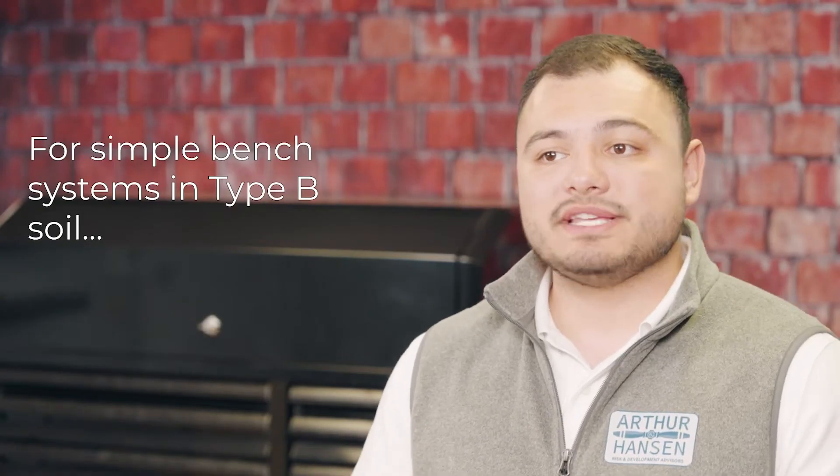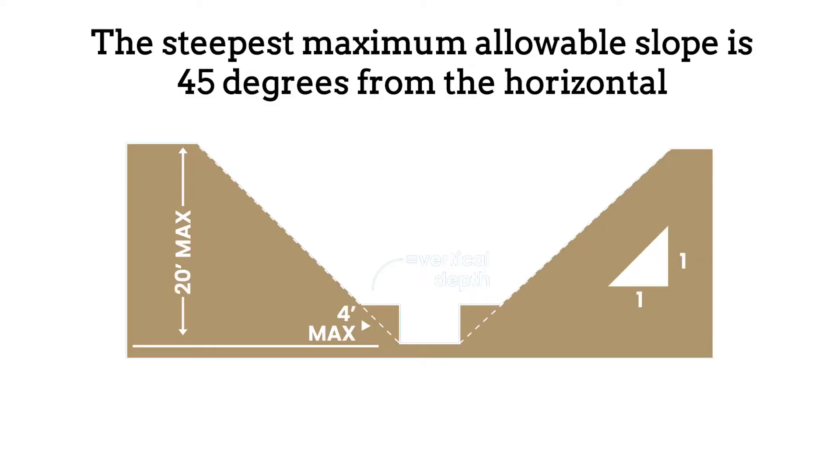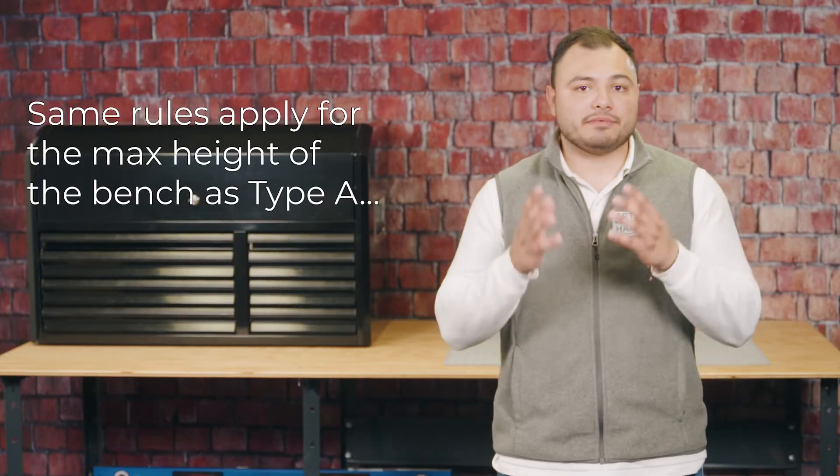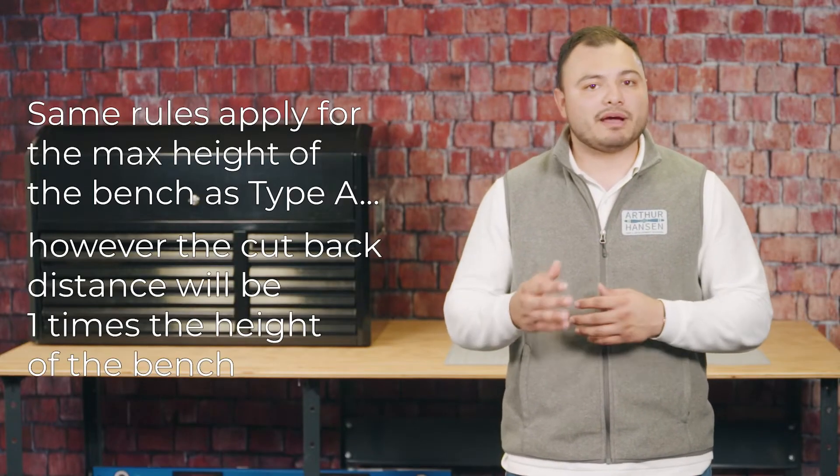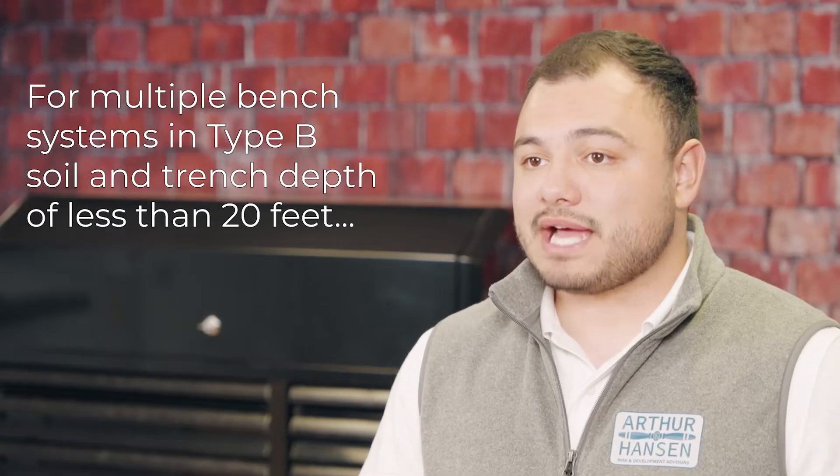For simple bench systems in type B soil and trench depth of less than 20 feet, the steepest maximum allowable slope is 45 degrees from the horizontal, or one vertical to one horizontal incline. Same rules apply for the max height of the bench as type A. However, the cutback distance will be 1 times the height of the bench.